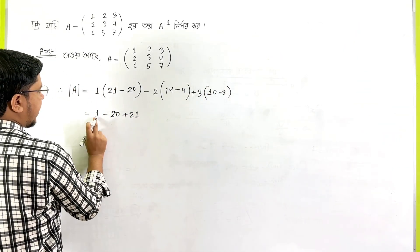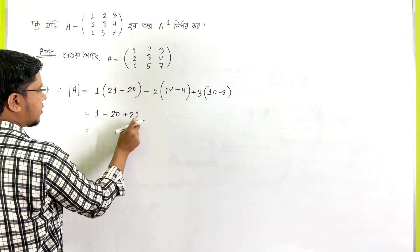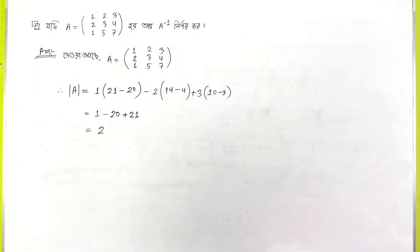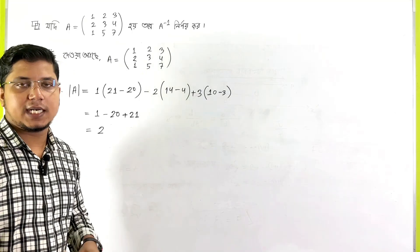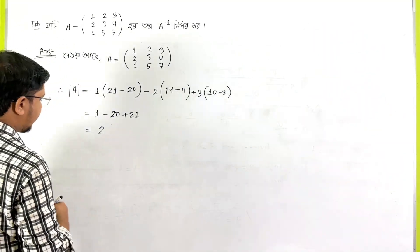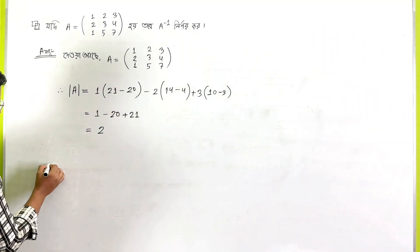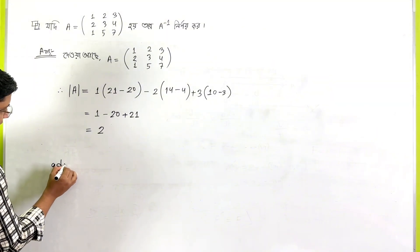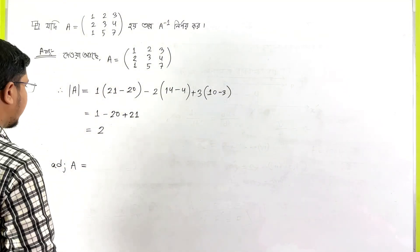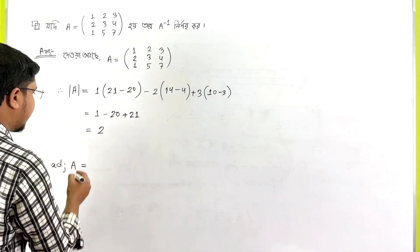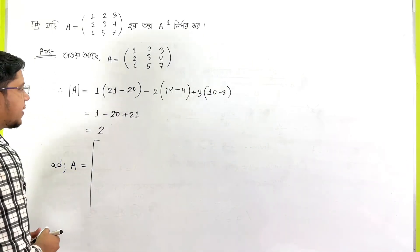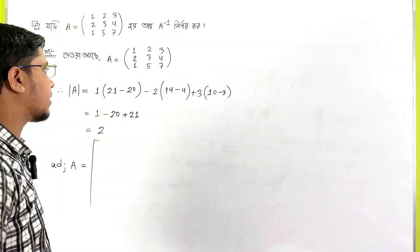Ultimately, what does A plus 1 mean? A plus 1 equals 2, which is 2. We have a matrix with the 2. The way we have the adjoint matrix. Because A matrix is the adjoint matrix. We have to look at this matrix.